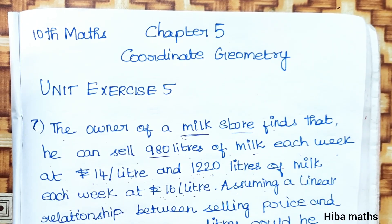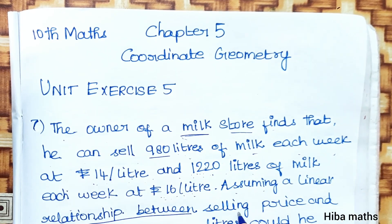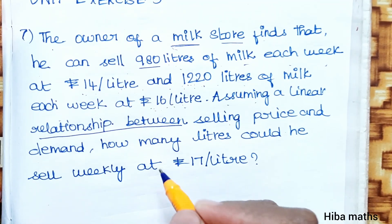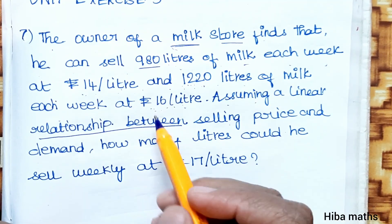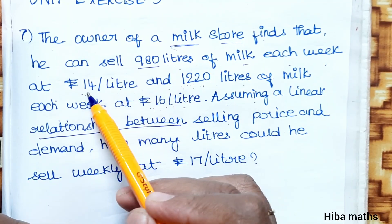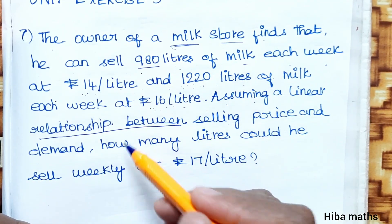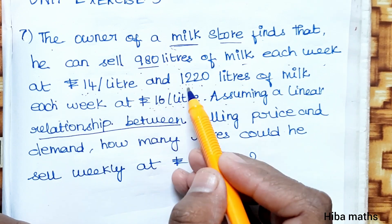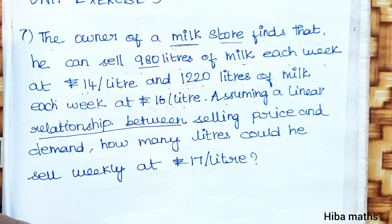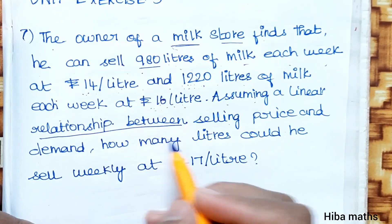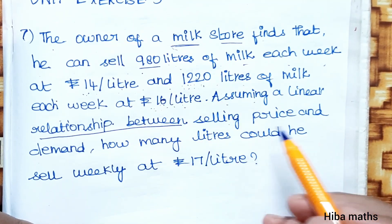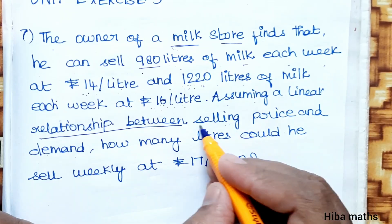Assuming a linear relationship between selling price and demand, we identify two points: the first point is (14, 980) and the second point is (16, 1220). We will use the two-point formula to find the equation relating selling price and demand.